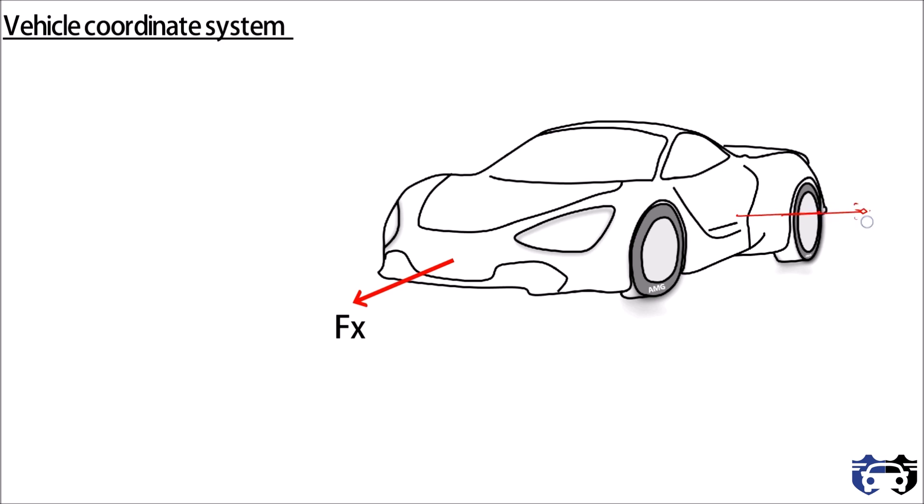The y-axis is in the lateral direction, left to the driver, with force Fy. And the z-axis is pointing upward, opposite to gravity when the car is placed on a flat paved road, with force Fz.